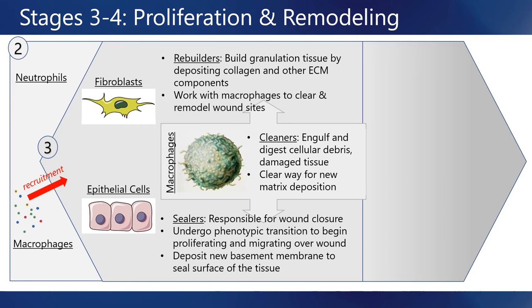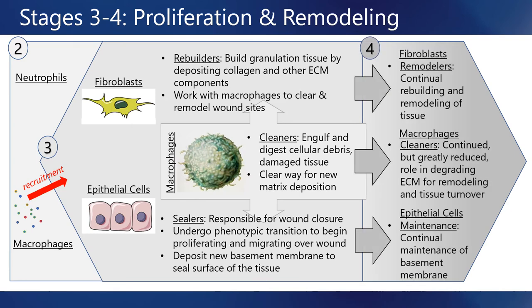Epithelial cells are the sealers, responsible for closing the wound. The cells undergo a phenotypic transition and begin proliferating and migrating over the wound, depositing new basement membrane to seal the surface of the tissue. Following wound closure, fibroblasts, macrophages, and epithelial cells continue to work together through an extended remodeling phase in which the body attempts to return the tissue to its native state. This remodeling phase is not perfect, resulting in what is called scar tissue.